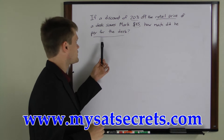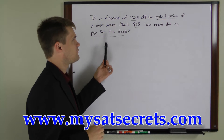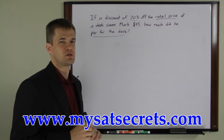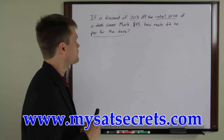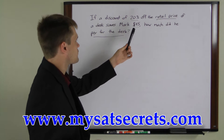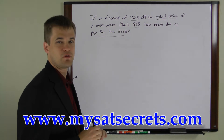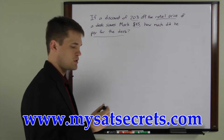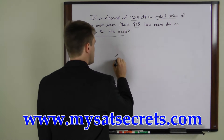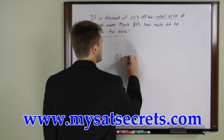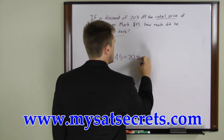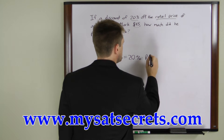We can't find the sale price directly, but we can find it after finding the retail price. So let's write an equation for the retail price. We're told that 20% off the retail price equals $45, so we write: 45 equals 20% times the retail price.